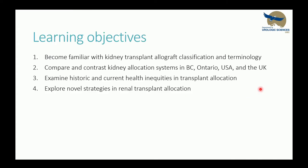I picked this topic because I've always been very curious about how the allocation process worked and how the kidney ended up in that red box ready for transplant. I find this is a very meaty topic that leads into discussions regarding ethics, health systems, and a constant optimization problem. My goal today is to give you an overview and working knowledge of deceased donor allocation. We're going to do this in four parts: classification and terminology, comparing and contrasting kidney allocation systems in four regions — BC, Ontario, the US, and the UK — then health inequities, and finally novel strategies in allocation.